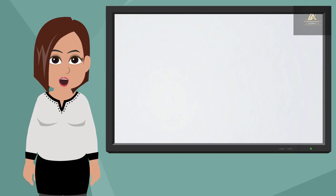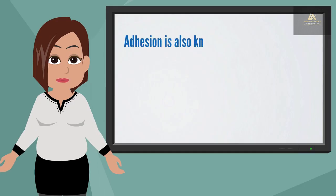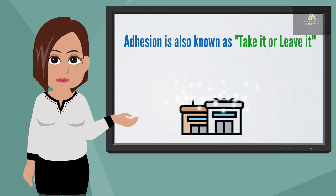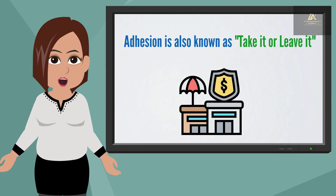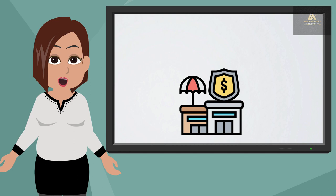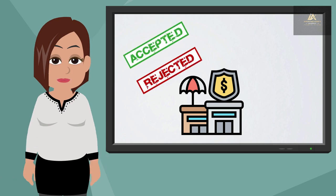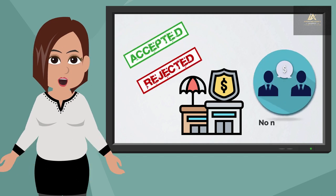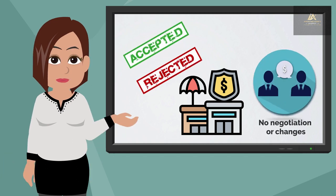Adhesion: adhesion is also known as take it or leave it agreements because they are prepared by only one party — the insurance company. They are accepted or rejected by the other party, the applicant, with no negotiations or changes.